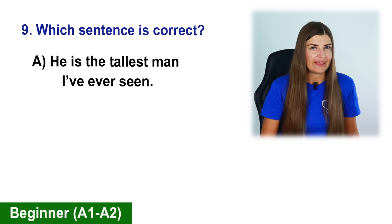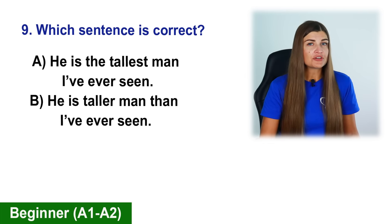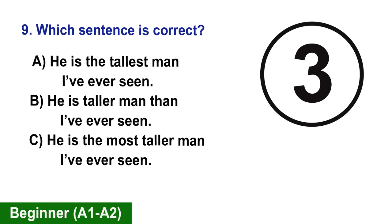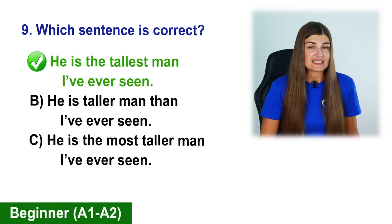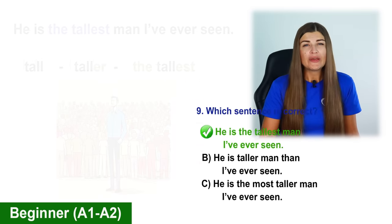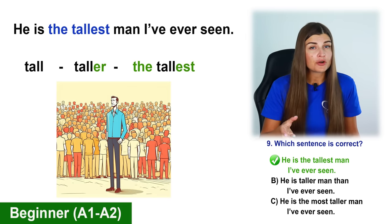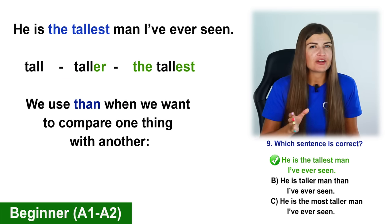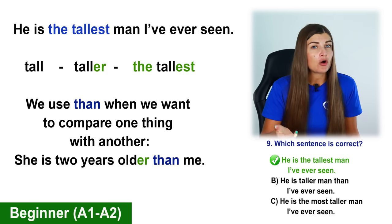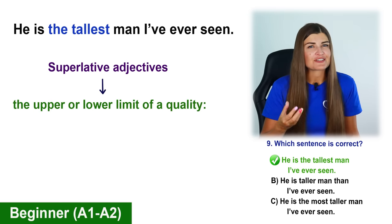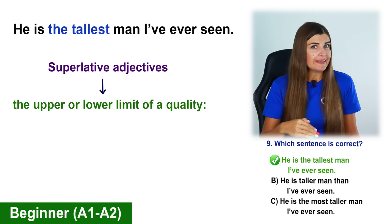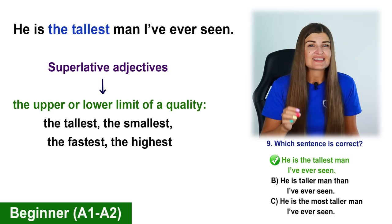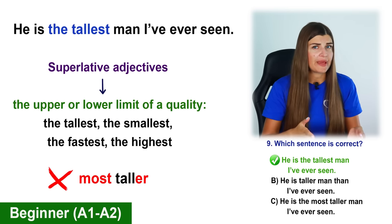Which sentence is correct? A. He's the tallest man I've ever seen. B. He's taller man than I've ever seen. C. He's the most taller man I've ever seen. The correct sentence is A. We have an adjective tall, a comparative form taller, and the superlative form the tallest. We use than when we want to compare one thing with another — for example, she's two years older than me. Superlative adjectives describe an object at the upper or lower limit of a quality: the tallest, the smallest, the fastest, the highest. We cannot say most taller man — that's not grammatically correct.